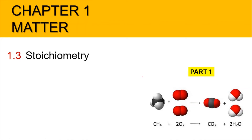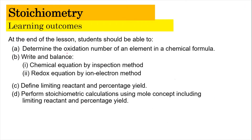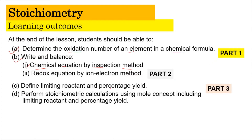Hi, Assalamualaikum and a very good morning. We are still in chapter 1 Matter, and now we're going to focus on the new sub-topic which is 1.3 Stoichiometry, part 1 of the video. In this video, we're going to determine the oxidation number of an element in a chemical formula, and focus on learning outcome B1: to write and balance chemical equations using the inspection method.